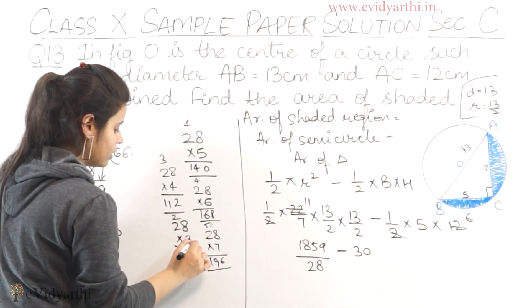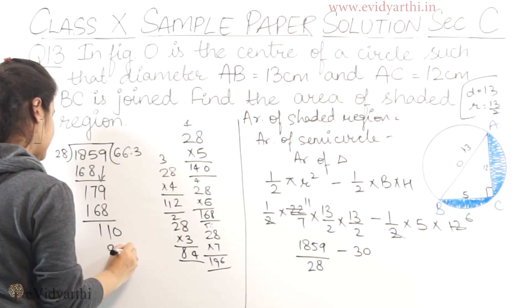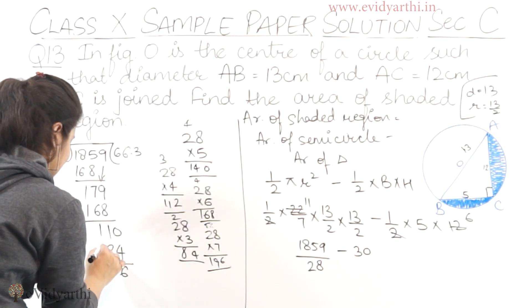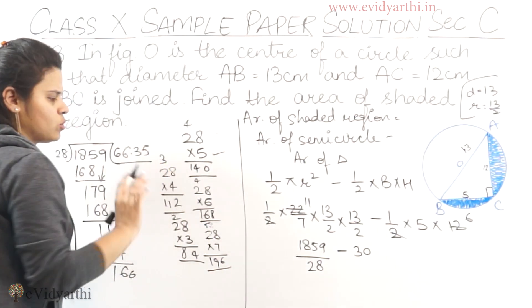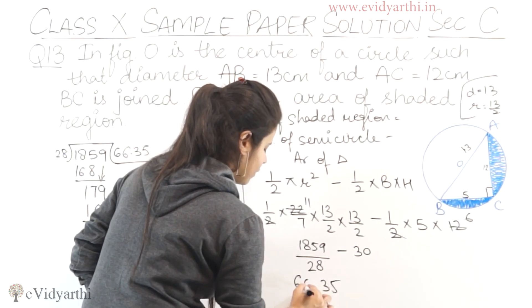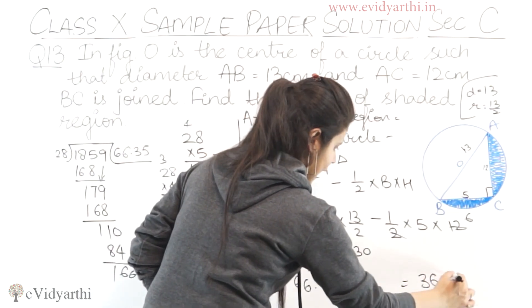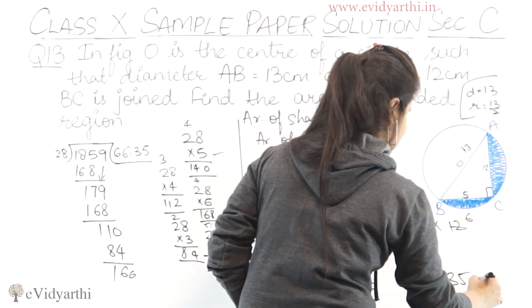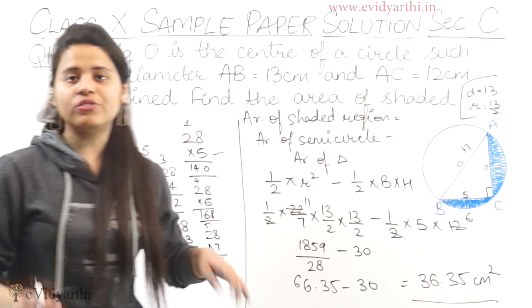After working through the calculations, we get 66.35. Now 66.35 minus 30 equals 36.35. So the area of the shaded region is 36.37 square centimeters.